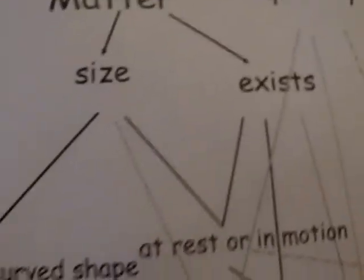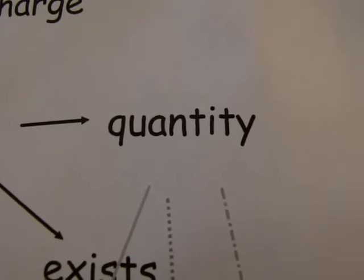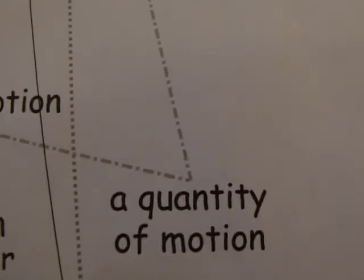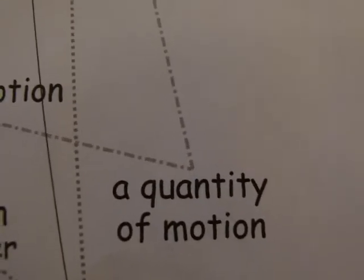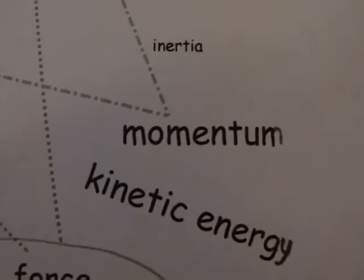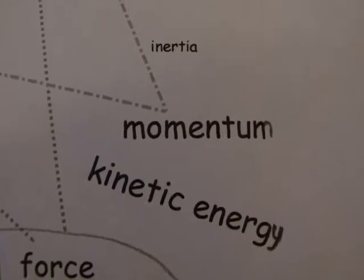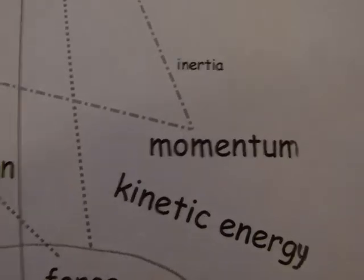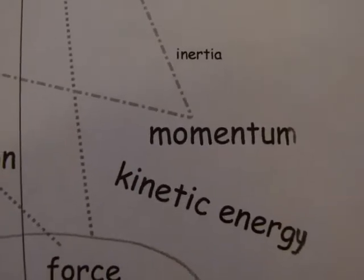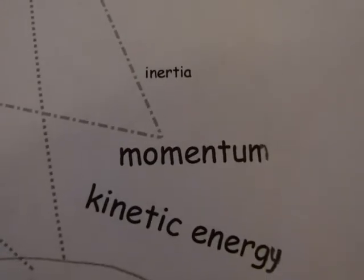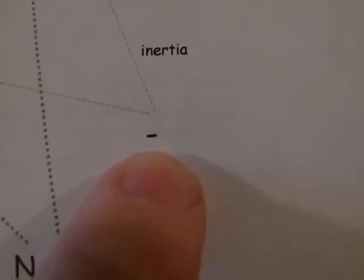Back to the definitions: if matter is in motion, it always has a quantity with it, and once it's moving it's said to have a quantity of motion. The quantity of motion is referenced with these three words: inertia, momentum, and kinetic energy. Inertia is matter's resistance to being moved; momentum is the quantity of motion it has once it is moving at a speed; and kinetic energy is also closely related.